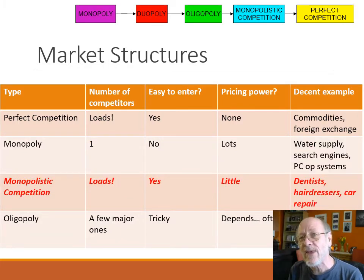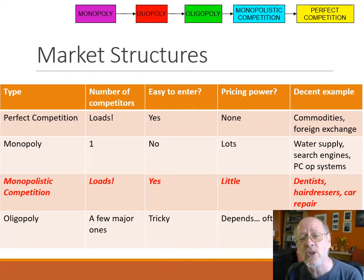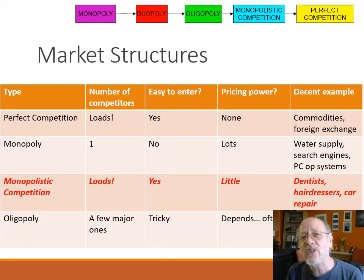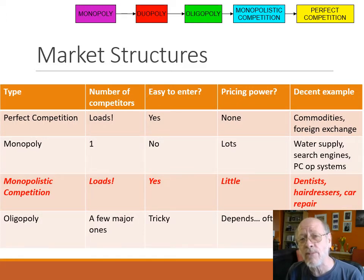So if those are the theoretical market structures, what are the real-world ones? Well, there are two: monopolistic competition and oligopoly. In monopolistic competition, just like perfect competition, there are loads and loads of competitors, but they are selling slightly different goods or services. That gives them a small amount of pricing power — if they charge too much, you're going to go to a rival.